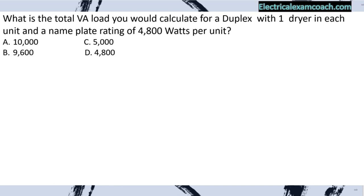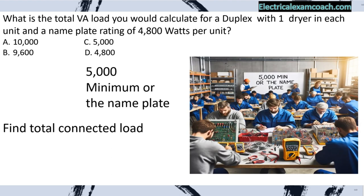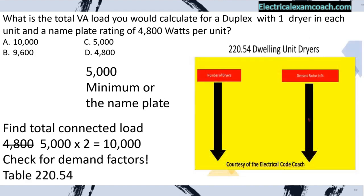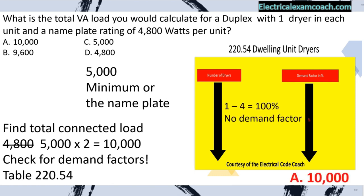Practice problem: What is the total VA load for one duplex with one dryer in each unit and a nameplate rating of 4,800 watts per unit? Find the total connected load: 5,000 minimum or the nameplate — the 4,800 is replaced by 5,000. Multiply by two units: 10,000. Check for demand factors: Table 220.54 shows one through four dryers at 100%. We select A.